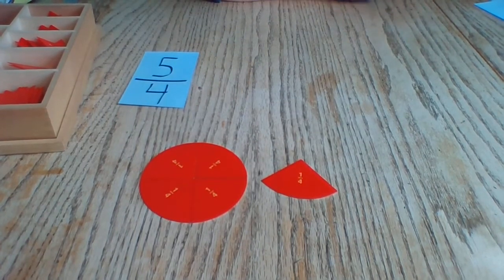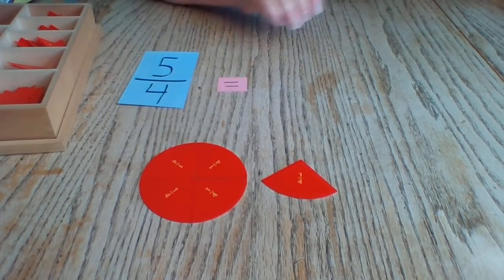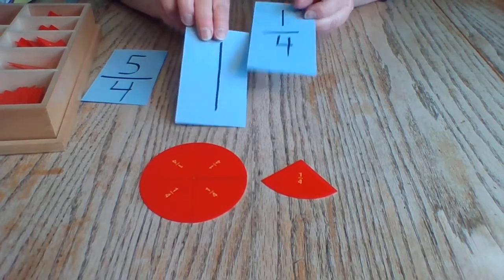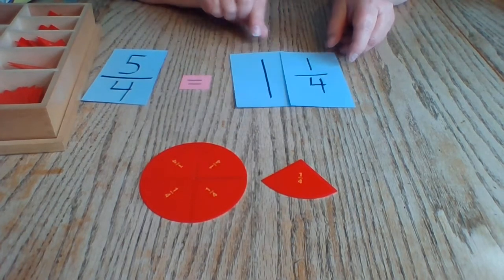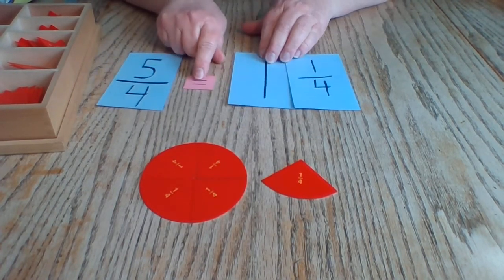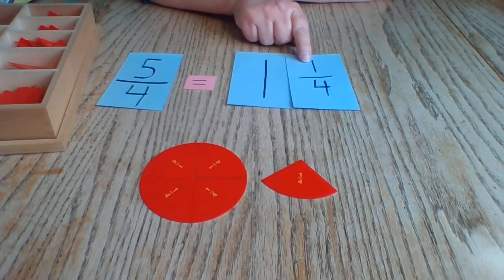And we have one-fourth left over. We can write that as a mixed number of one and one-fourth. So five-fourths is equal to one and one-fourth.